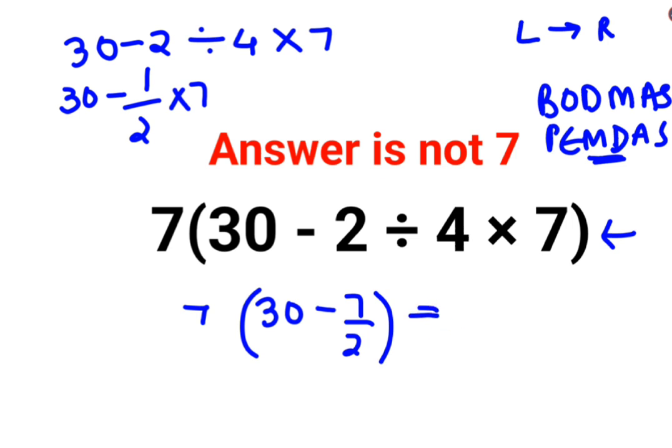So this becomes basically 7, and in the bracket we will take LCM, which is 2. So 30 gets multiplied by 2—60 minus 7—upon 2.